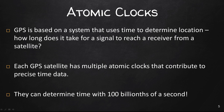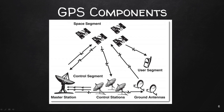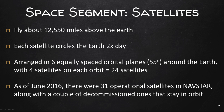GPS is composed of three segments: the space segment, the control segment, and the user segment. You should definitely know these three segments. The space segment consists of the satellites, which fly about 12,550 miles from the earth — you don't need to memorize that number in this class. Each satellite circles the earth two times a day.